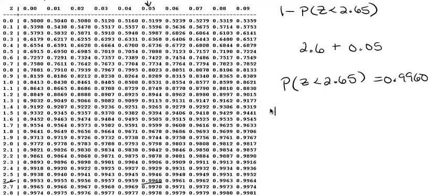So the probability that z is greater than 2.65, remember we're taking 1 minus, is equal to 0.0040 because we took 1 minus this number that we found on our table.